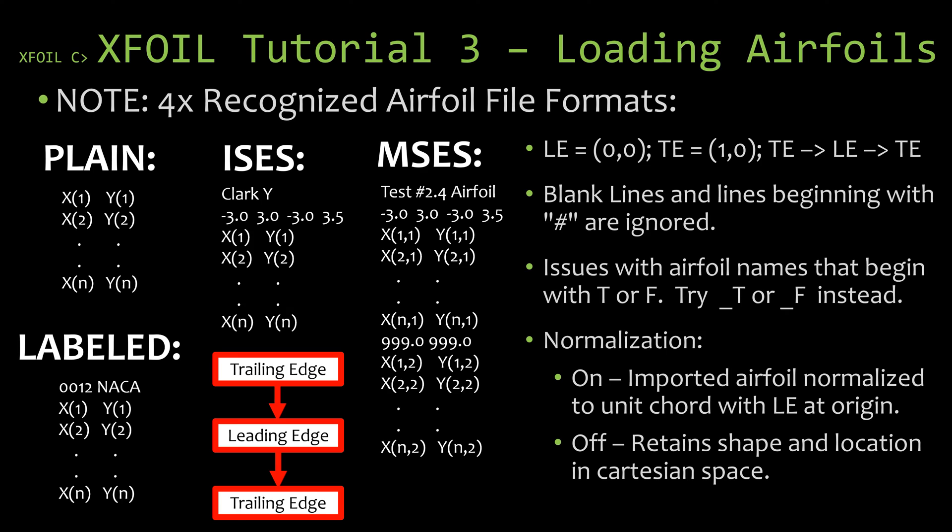Before we continue, let's take a moment to look at the airfoil file formats that X-Foil recognizes and uses. The plain file format has just the X and Y coordinates — no other data, no other strings of text. Each line is a different coordinate pair, an X-Y pair used to make up the airfoil shape. Each line represents one point on that shape, so these files can get pretty long depending on how many coordinate pairs are used to create the shape.